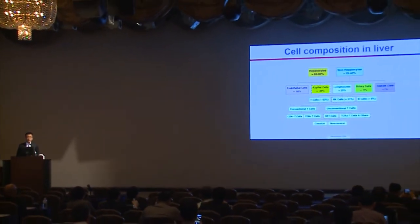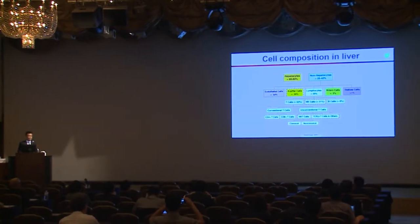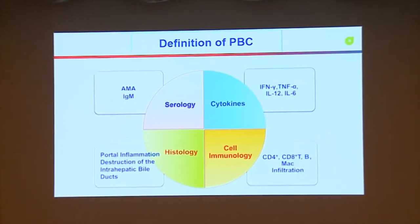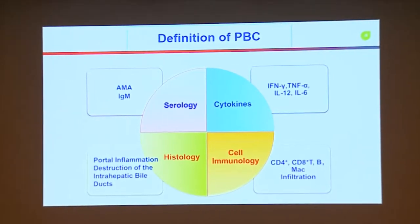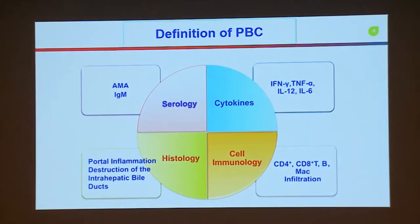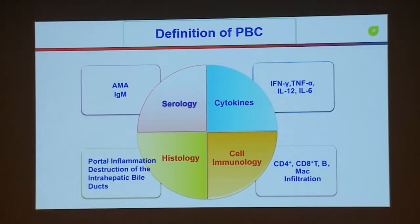It is very well known that in the liver there are a lot of immune cells, including innate and adaptive immune cells. There are Kupffer cells, also T cells, also NK cells. In PBC, more than 90% of patients in serum can have very high levels of AMA and IgM. It is a TH1 disease with interferon gamma and TNF alpha, and histologically there is major portal inflammation and destruction of small intrahepatic bile ducts, with a lot of CD4 and CD8 cells, macrophages, and inflammation in the liver.